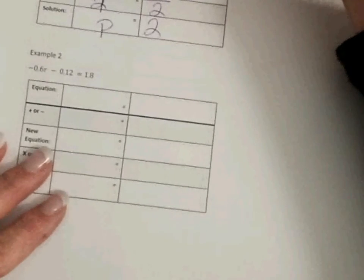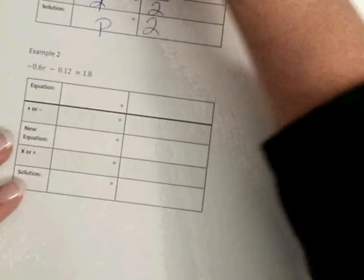Our next example is negative 6 tenths r minus negative 12 hundredths equals 1.8.